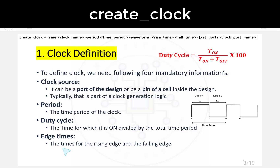Edge times refer to the times for the rising edge and the falling edge. For example, if we have a rising edge at 0 and another at 10, and falling edges at 5 and 15, then rising edges are at 0 and 10, and falling edges are at 5 and 15. These are the basic terminologies you need to know.